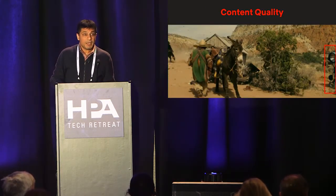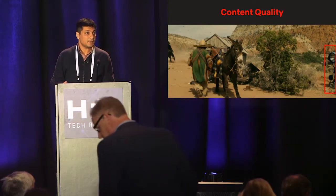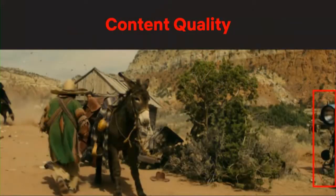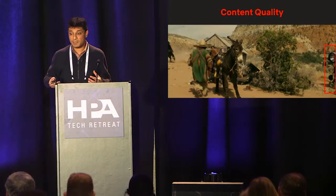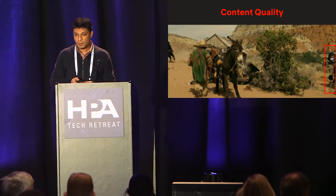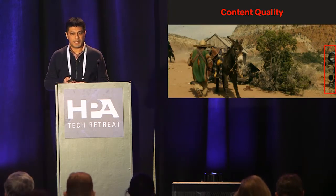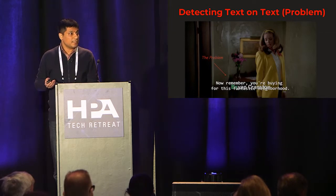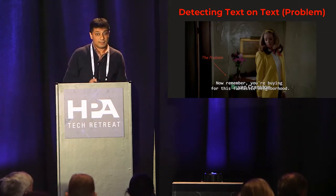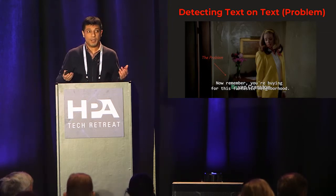Content quality is another big factor — it's very vital to the Netflix user experience. The image shown here corresponds to a title from the Western classical genre where some of the lights used for the production became part of the video. It would be great if there were automated systems that could detect and localize such objects through bounding boxes. Another such problem is subtitles text overlaying on top of text that is burned into video, making the whole experience unreadable.